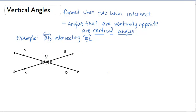When we have this intersection, that means we have vertically opposite angles forming. So those vertically opposite angles are the vertical angles. We have two vertical angle pairs.